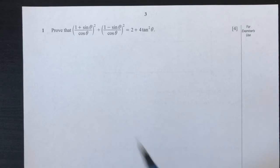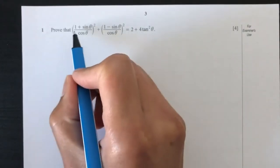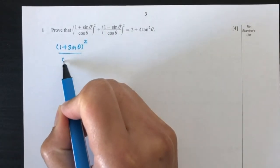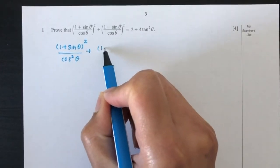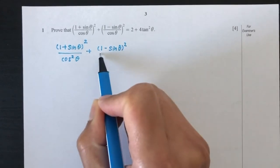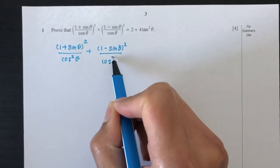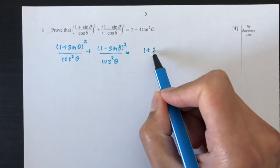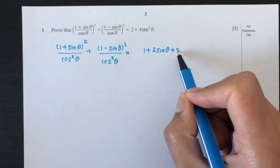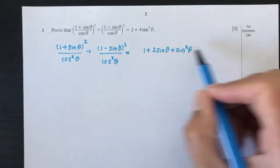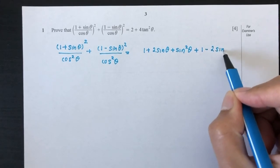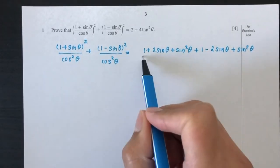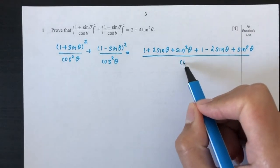We have to expand those two. First, this will become (1 + sinθ)² over cos²θ plus (1 − sinθ)² over cos²θ. Now we can expand the tops: this becomes 1 + 2sinθ + sin²θ, plus 1 − 2sinθ + sin²θ. That is the expansion for those two on top, and that will be over cos²θ.